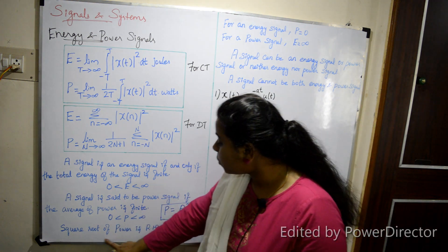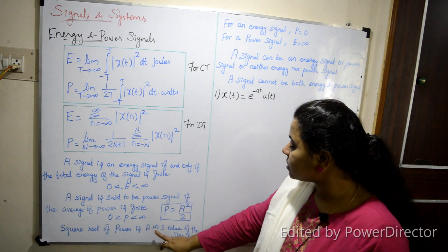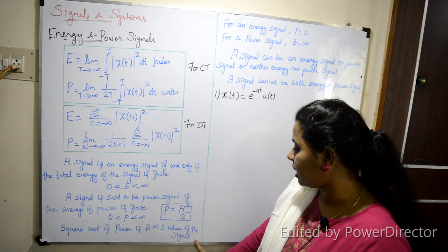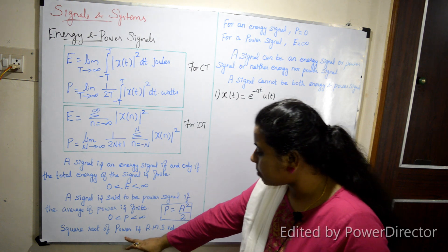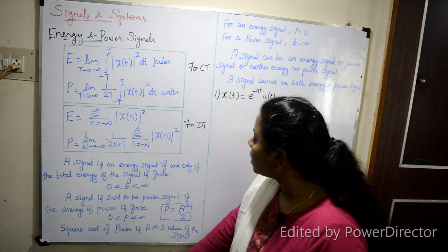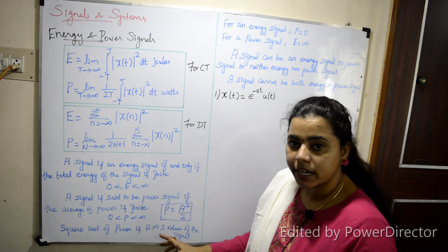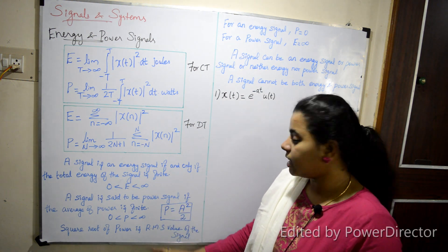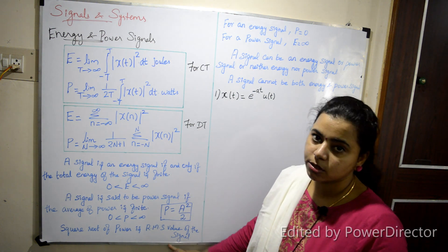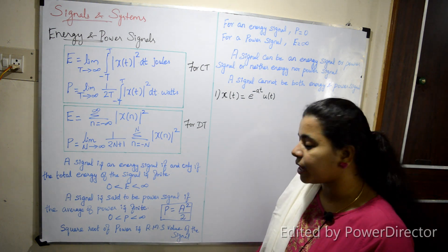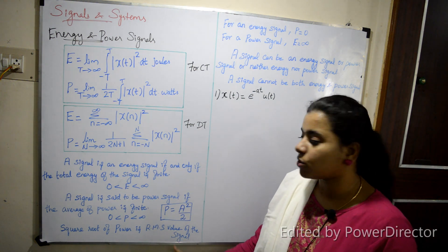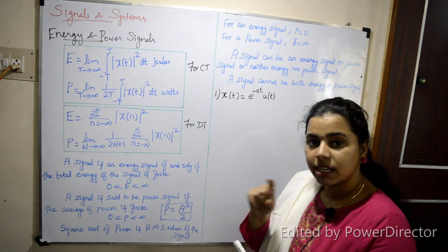The square root of power is the RMS value of the signal. So if we find the power value, we can find the RMS value of the signal by taking the square root of power — that is the Root Mean Square value.